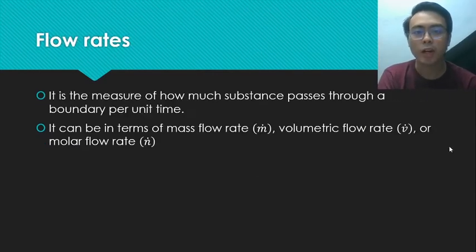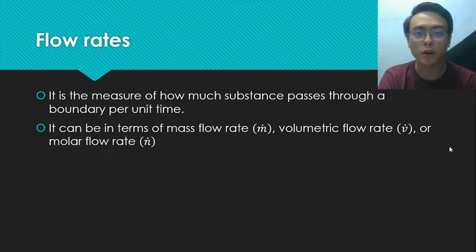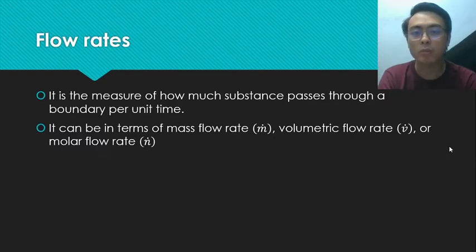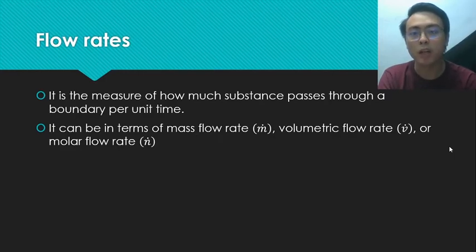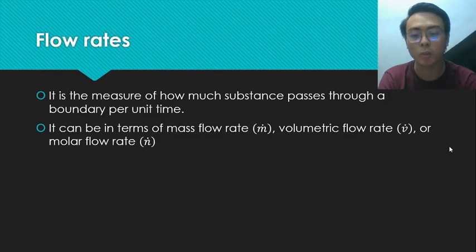Next are flow rates, the most commonly encountered quantities in material balances, because processes have inputs and outputs — they are not static. Flow rate measures how much substance passes through a boundary per unit time. Mass flow rate is the amount of mass per unit time, volumetric flow rate is for volume, and molar flow rate is for number of moles. Conversions between the three depend on the molecular weight or density of the substance.